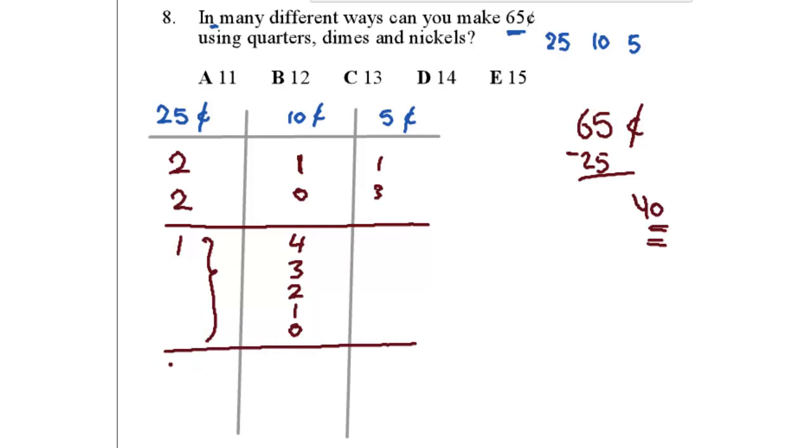Or, I can use no quarters at all, no 25 cents at all. What is the maximum number of 10s that I can use to get 65? 6, right? I can't use 7 because 7 will be 70. So, I can use 6 and some combination of 5s. It doesn't matter. Or, 5 10s or 4 or 3 or 2 or 1 or no dimes at all.